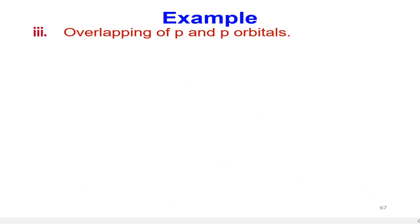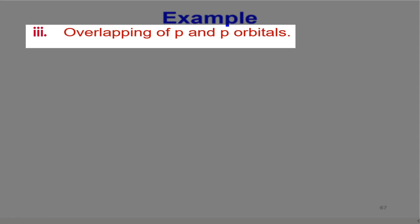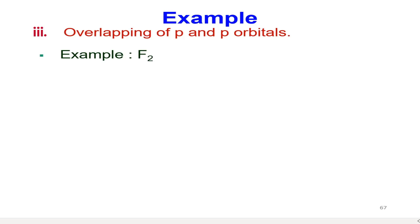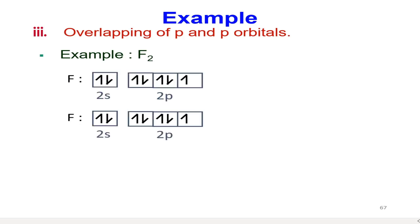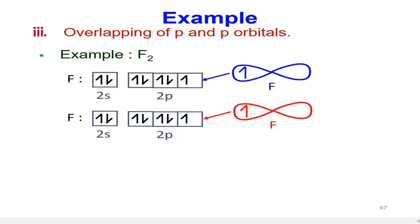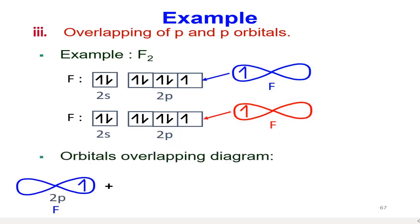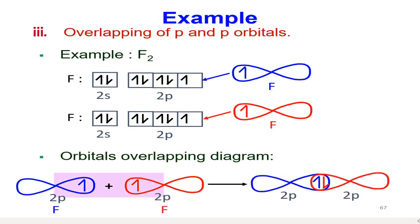The third way a sigma bond forms is overlapping of two p orbitals. We take fluorine gas (F₂) as the example. Fluorine has seven valence electrons and only one unpaired electron, located in a 2p orbital. To achieve an octet, the two fluorine atoms share their unpaired electrons, and the overlapping of the two p orbitals forms a sigma bond.